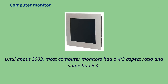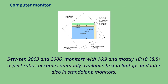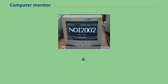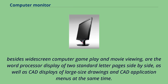Until about 2003, most computer monitors had a 4:3 aspect ratio and some at 5:4. Between 2003 and 2006, monitors with 16:9 and mostly 16:10 aspect ratios became commonly available, first in laptops and later also in standalone monitors. Reasons for this transition included productive uses such as widescreen gaming and movie viewing, word processor display of two standard letter pages side by side, as well as CAD displays of large drawings and CAD application menus at the same time.